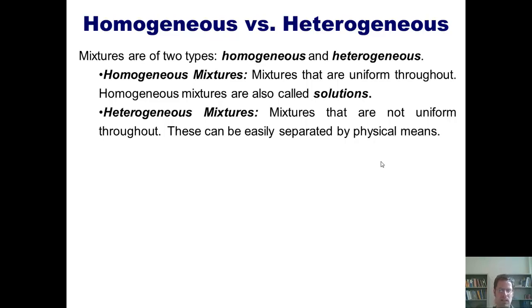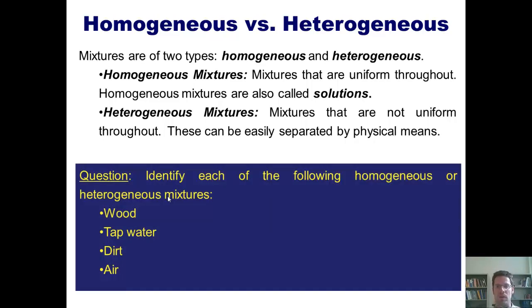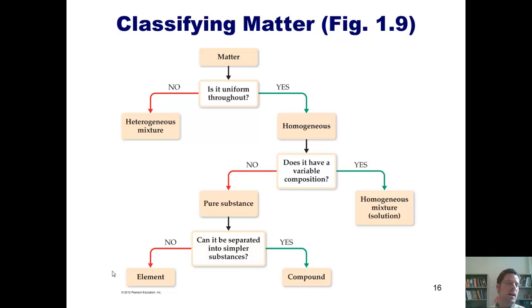Now, this brings me to a sample lecture question that I'm going to ask you. Identify each of the following as being homogeneous or heterogeneous: wood, tap water, dirt, and air. I'm not going to answer it to you, but we'll let you instead think about it on your own. One way that you can do so is by using this figure from our text as a guide. By going down this hierarchical diagram, you can easily classify any substance into the various subcategories shown here in these cute little pink boxes. Enjoy!